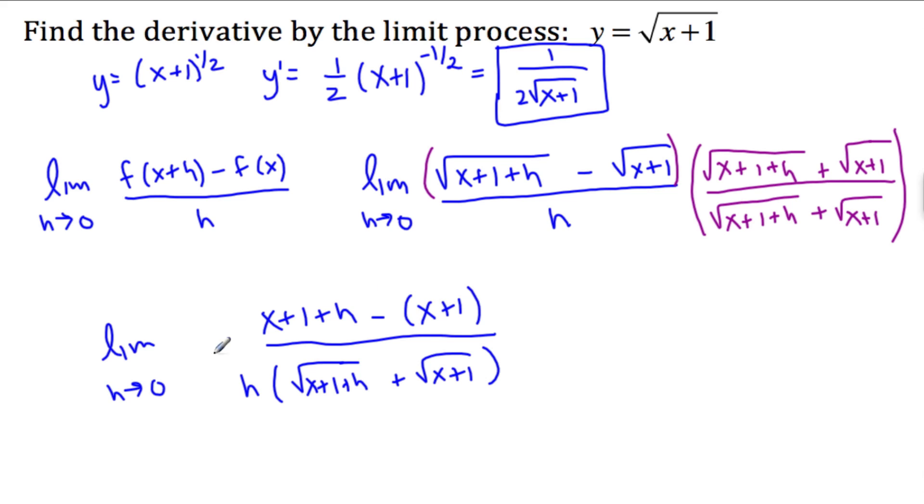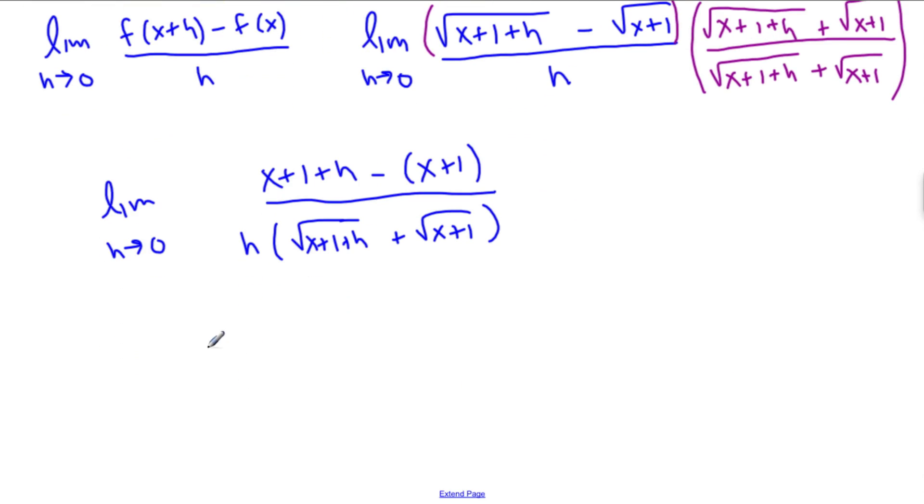Okay, so let's simplify this now. Almost done. Limit as h approaches 0. Some things will cancel. We get an x minus an x here. And a 1 minus a 1. So in the numerator, we're left with just h. In the denominator, we have h and root x plus 1 plus h plus root x plus 1.